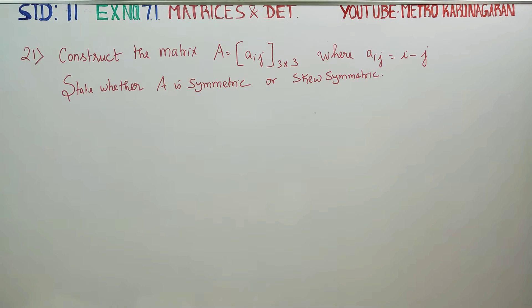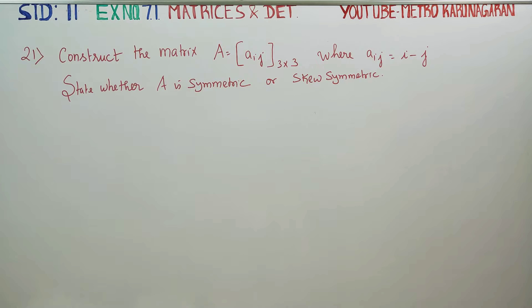Dear students, in exercise number 7.1, sum number 21, we have to find a matrix A and we have to show that it is symmetric or skew symmetric.